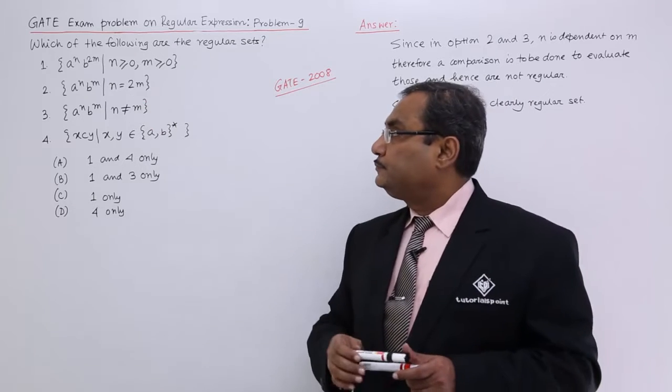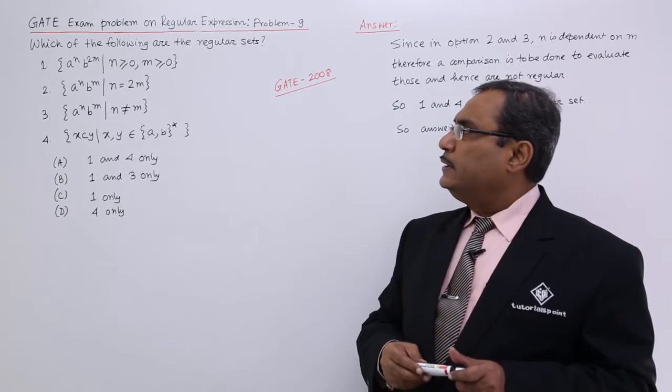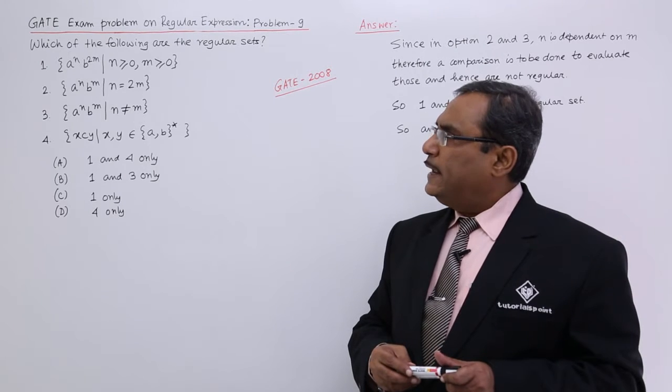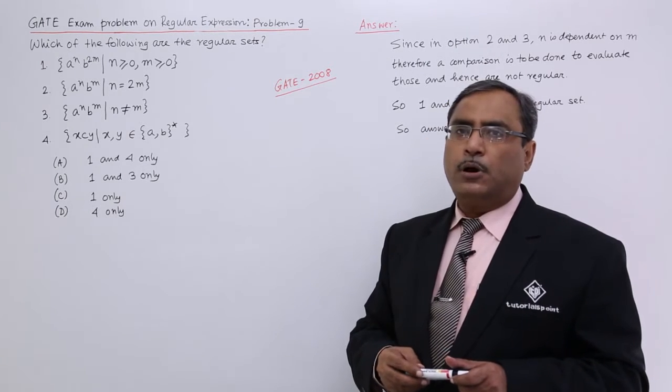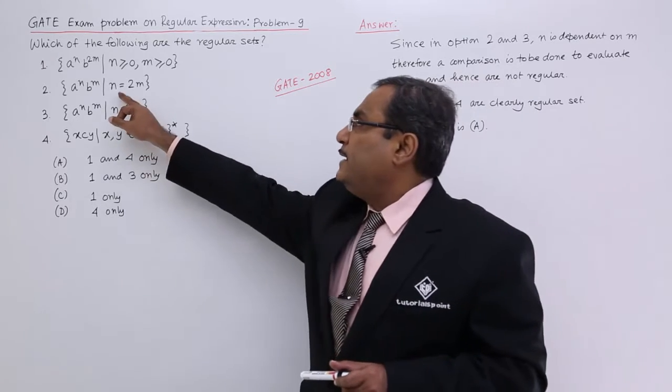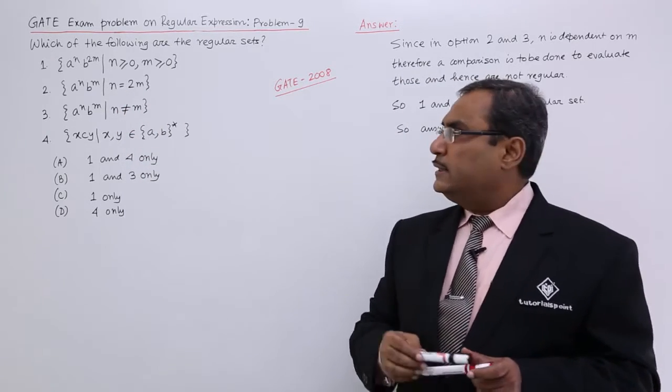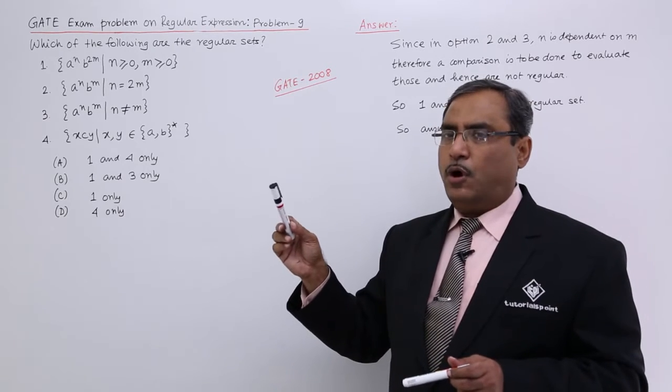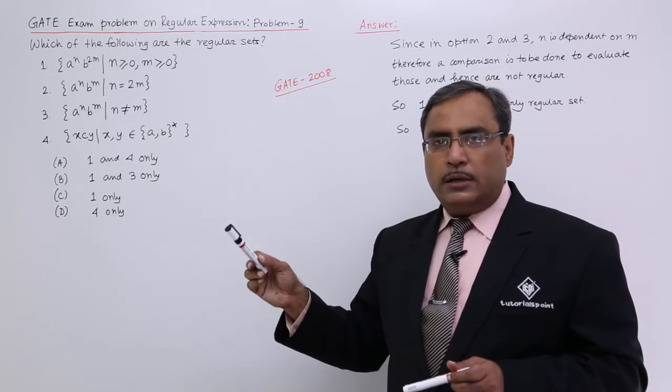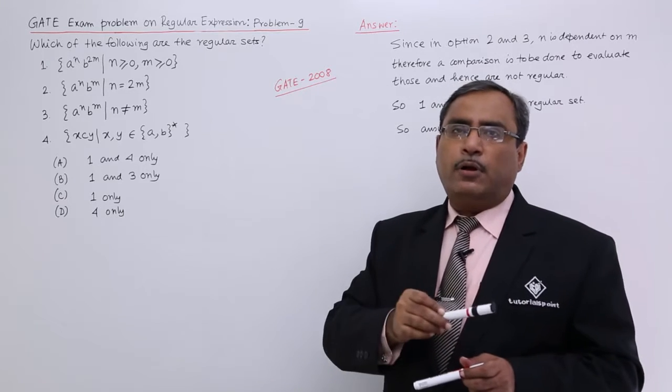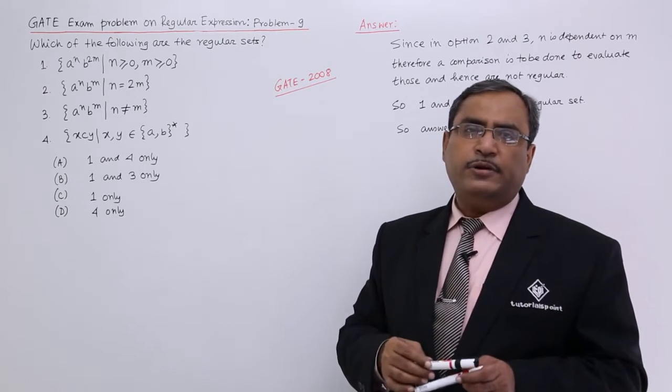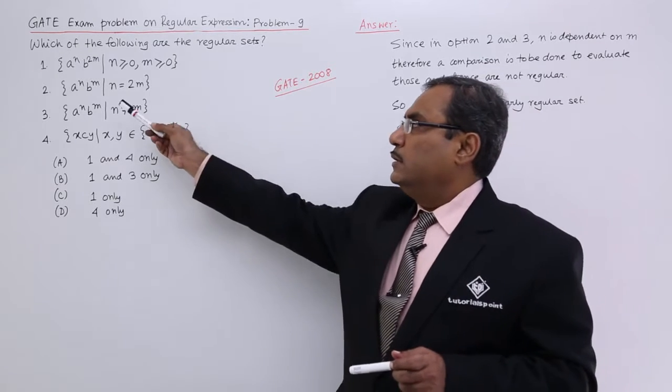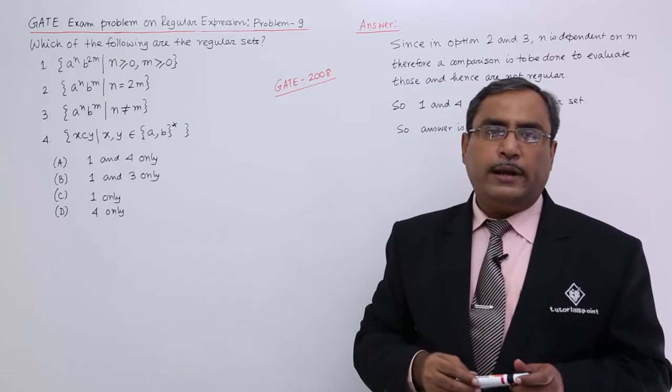But the second one, here we are having a to the power of n and b to the power of m where n is equal to 2m. So here there is a dependency between the number of occurrences of a and number of occurrences of b. Always b will occur double than the number of a in the given string. Against this particular language I cannot form any regular expression.